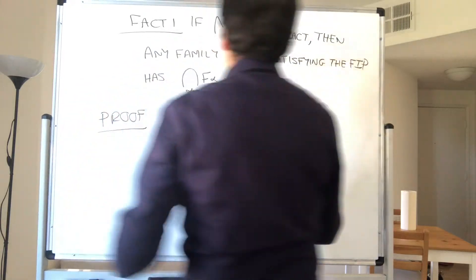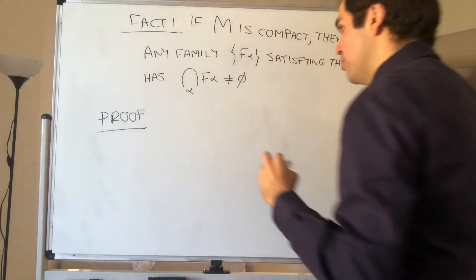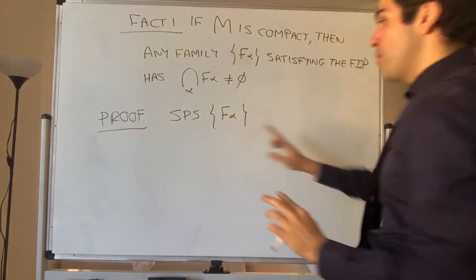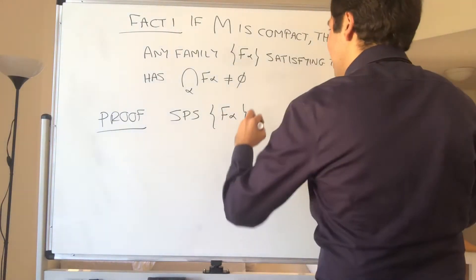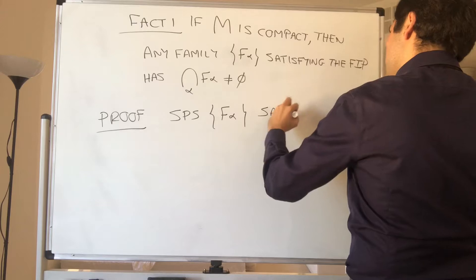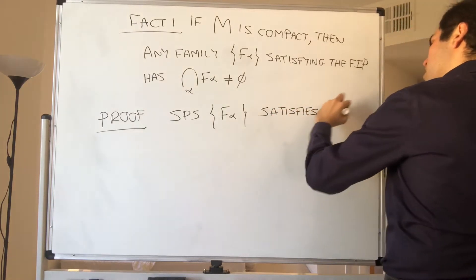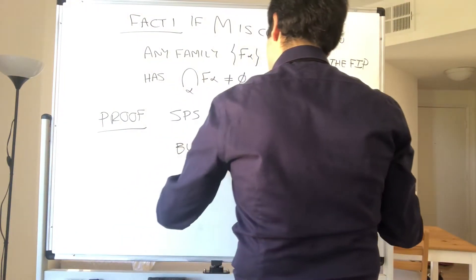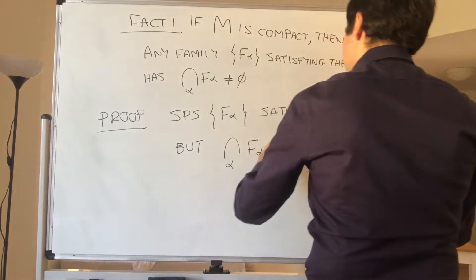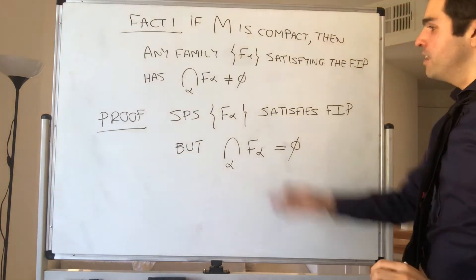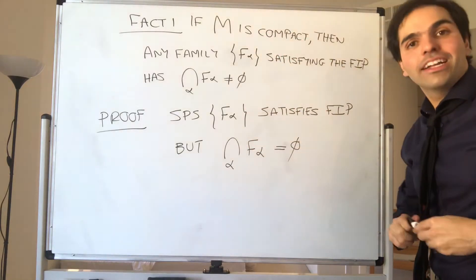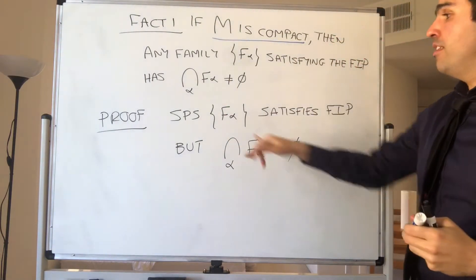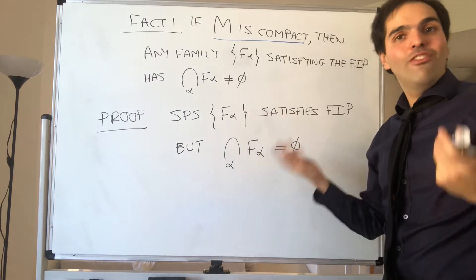So proof. Suppose you have a family like that — suppose the family F-alpha of non-empty and closed subsets satisfies the finite intersection property. But suppose that the intersection of all F-alpha is empty. We want to find a contradiction. M is compact, so we want to talk about open covers. How can we find open sets here? Well, F-alpha is closed, so F-alpha complement is open.